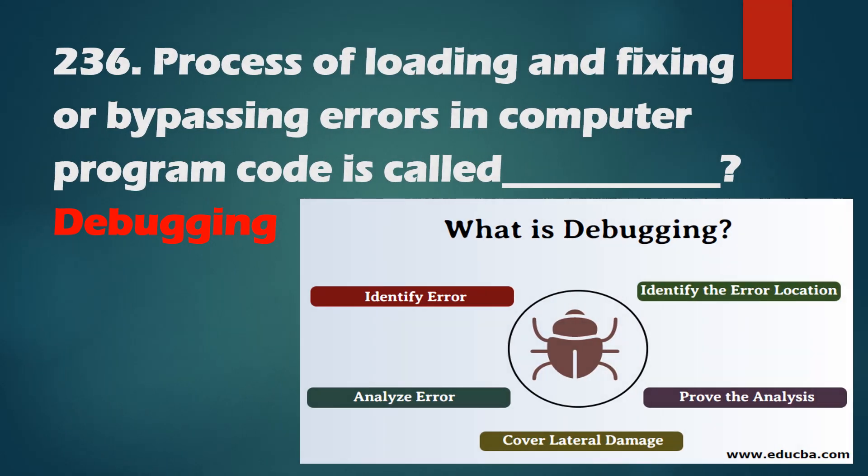Question No. 236: The process of locating, fixing, and bypassing errors in computer program code is called debugging. In computer terminology, an error is called a bug.